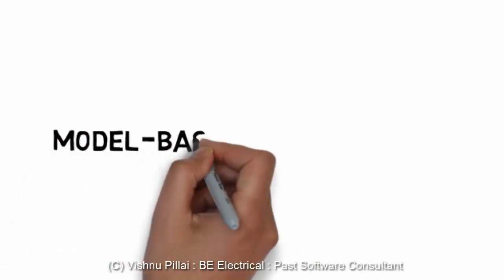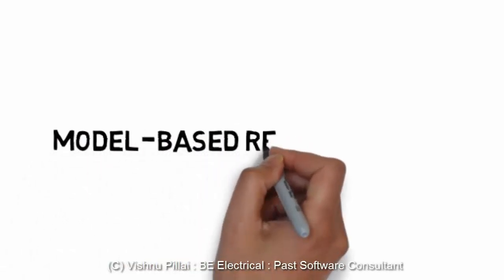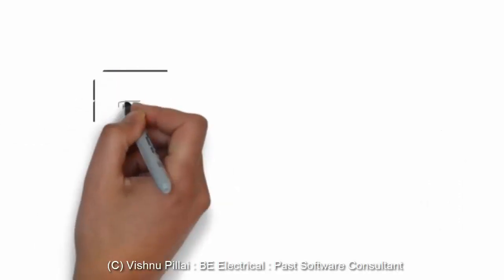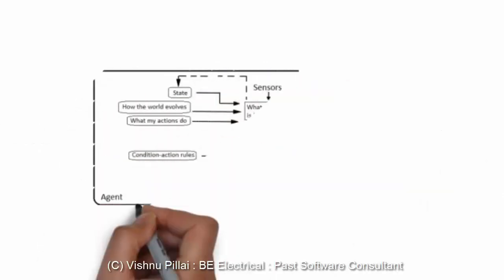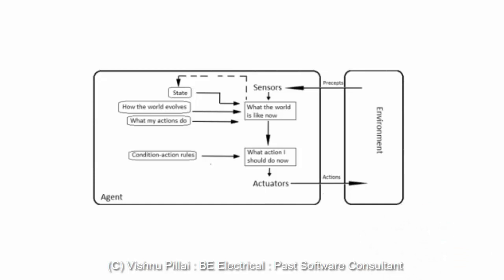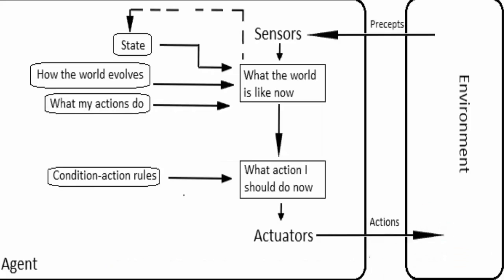This video is about model-based reflex agents. We will look into the working and the diagram of model-based reflex agents with examples. If you look at the architecture of a model-based reflex agent, like all intelligent agents it will have a sensor, an actuator, and it will act in the environment. What makes this different from the simple reflex agent is that it is able to store its percept history.